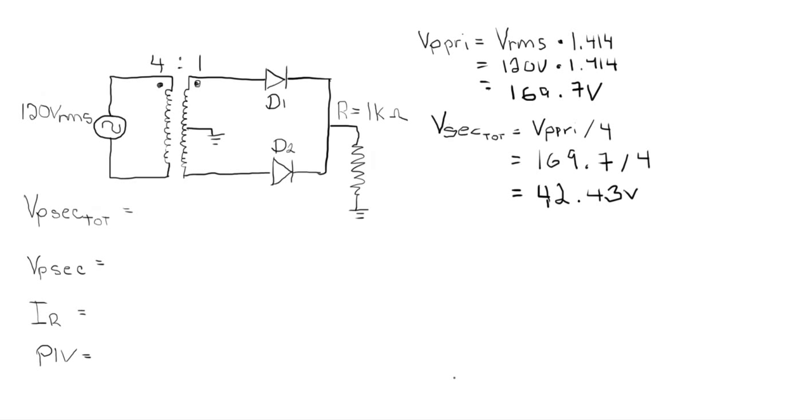Then they ask us to find the voltage across one half. I've decided to call this just V secondary. So the distinction is total is across the entire secondary, secondary that we're calculating here is just for one half. Of course, that seems like some simple math, because if we just want half, we take the secondary total and we divide it by 2. So that's going to give us half of the secondary value. That's 42.43 divided by 2.